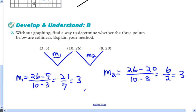and since our two slopes, our slope 1, is equal to our slope 2, we know the points are collinear.